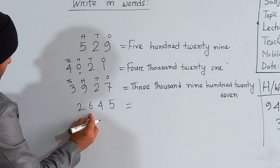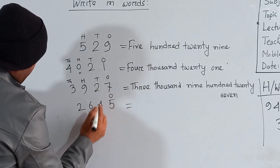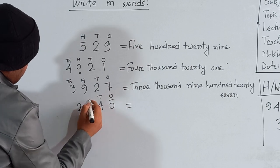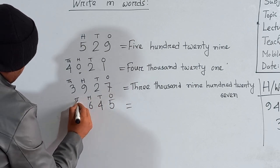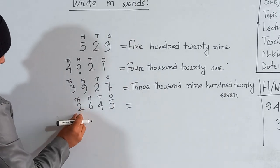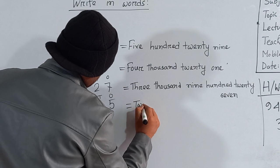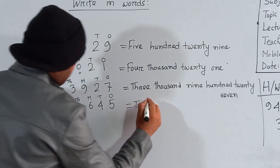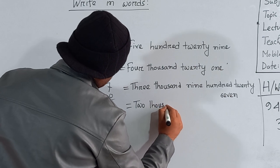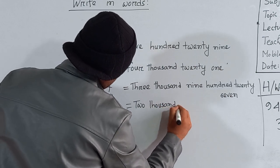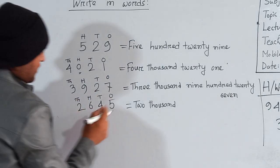Now look here — 2-6-4-5. Five is in the ones place, four is in the tens place, six is in the hundreds place, and two is in the thousands place. How many thousands are here? Two thousand — T-W-O T-H-O-U-S-A-N-D — two thousand. How many hundreds are here? Six hundred.